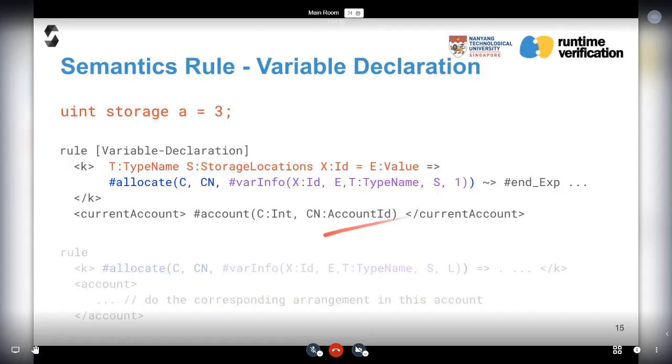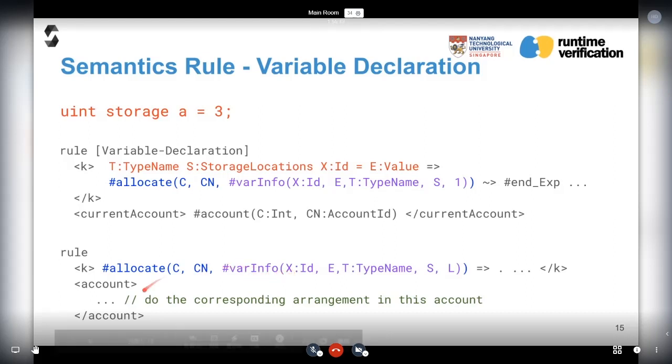Then we move on to this allocate term. Whenever we see this allocate term in a case cell provided with the necessary information, we are able to do the corresponding arrangement in this account - insert this variable record in this account cell. To sum up, to develop a formal semantics of Solidity in the K framework, we need to define first the configuration, second a set of semantics rules like this for each statement.